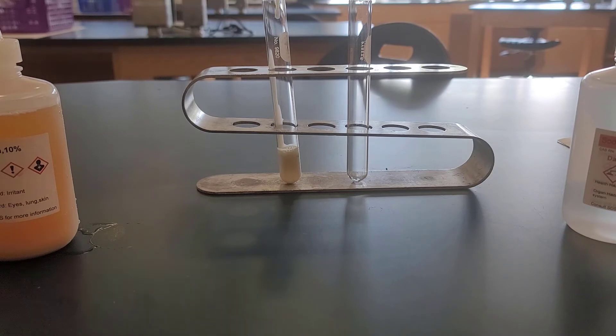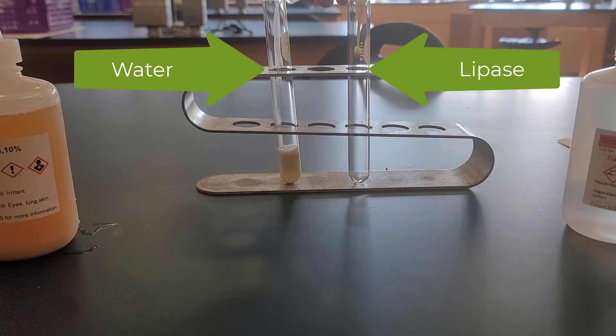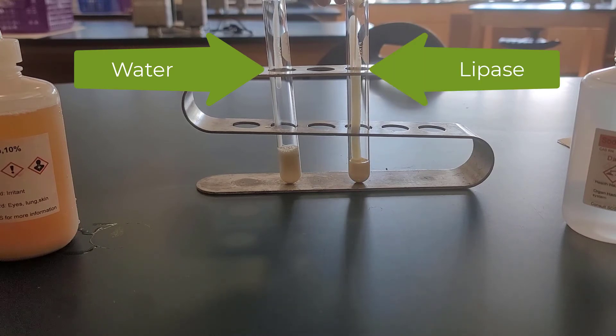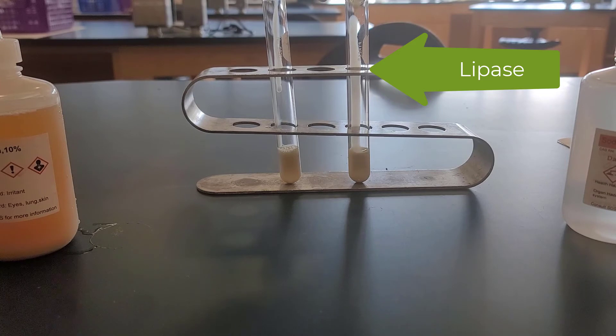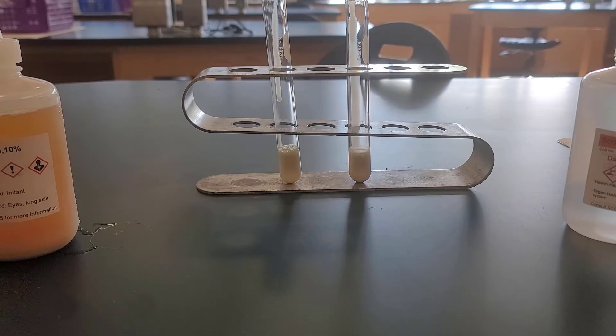In tube two, we're going to have five milliliters of canned milk, just like we did in tube one. We're going to have three milliliters of lipase. In this case, we store ours on ice on the back shelf. So that's going to be the difference—the water and the lipase are going to be the difference between tube one and tube two. In tube two, we're also going to have four milliliters of litmus solution and three drops of two percent sodium hydroxide.